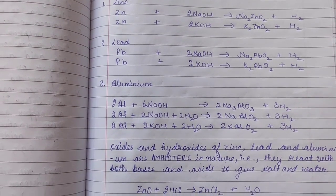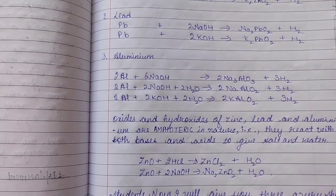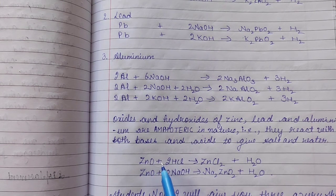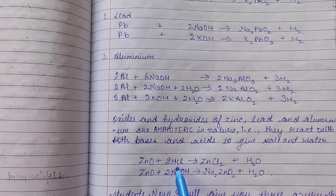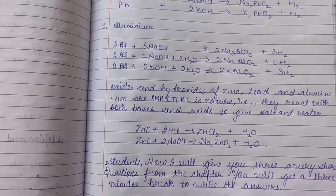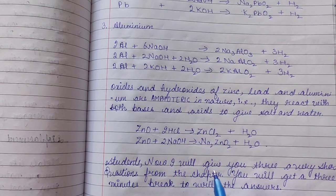You may observe the reactions here. On reacting ZnO (zinc oxide) with hydrochloric acid, it gives zinc chloride plus H₂O. Similarly, the reaction of zinc oxide with sodium hydroxide will give sodium zincate and water.